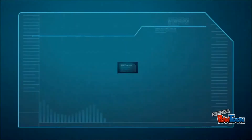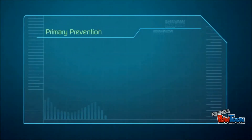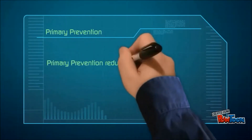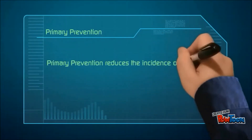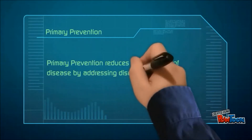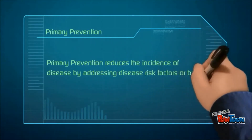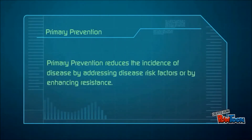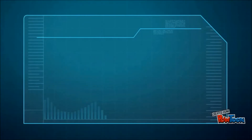Primary prevention reduces the incidence of disease by addressing disease risk factors or by enhancing resistance. Some approaches involve active participation, as with regular tooth brushing and flossing to prevent dental decay. Other approaches are passive, such as adding fluoride to municipal drinking water to harden tooth enamel and prevent cavities.